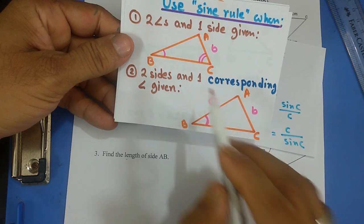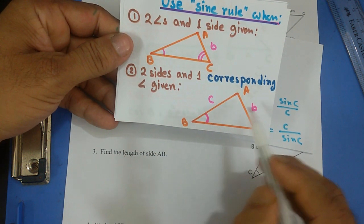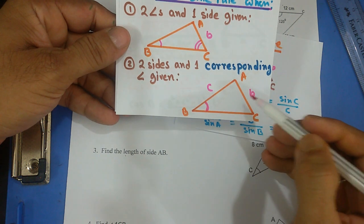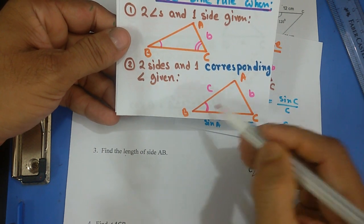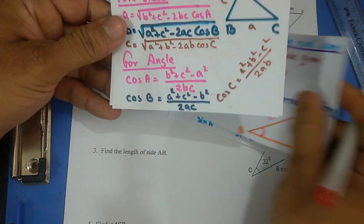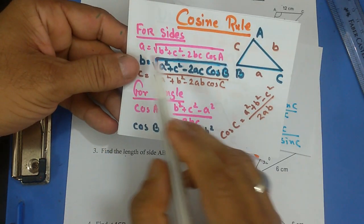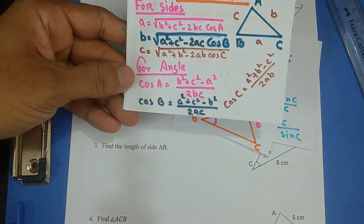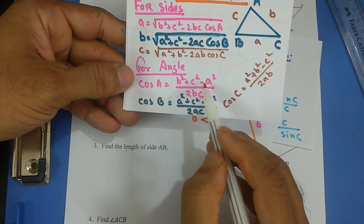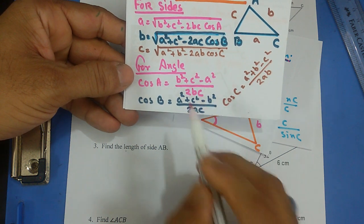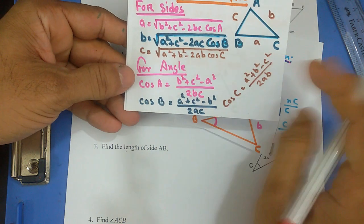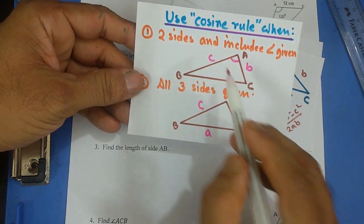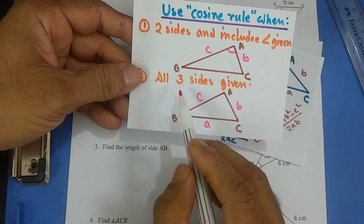Two sides and one corresponding angle means the two sides are given and the angle has to be opposite one of those given sides — so that angle is opposite one of the given sides. The cosine rule is: side a equals square root of b squared plus c squared minus 2bc cos A. For finding an angle: cos A equals b squared plus c squared minus a squared, all divided by 2bc. We use the cosine rule when two sides and the included angle are given, or when all three sides are given.